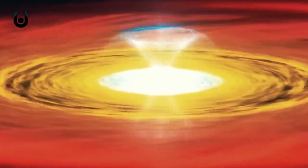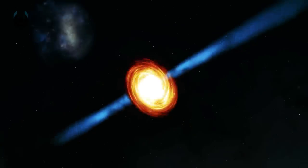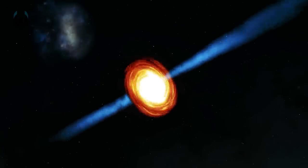When material gets too close to a black hole, it forms that bright hot accretion disk around the black hole. That accretion disk heats up to millions of degrees,